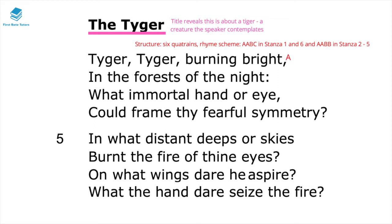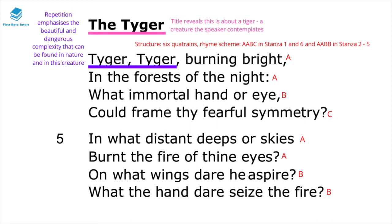As you can see in the opening stanza it starts off with AABC, and then in stanza two it's AABB. The repetition of 'tiger, tiger' emphasizes the beauty but also the dangerous complexity that can be found both in nature and within this creature.